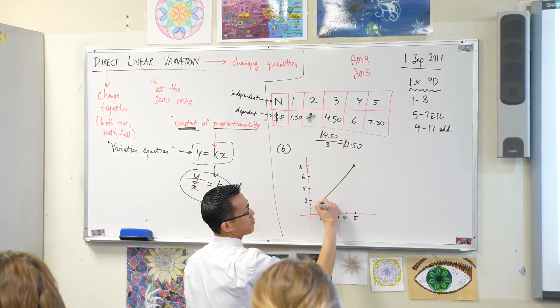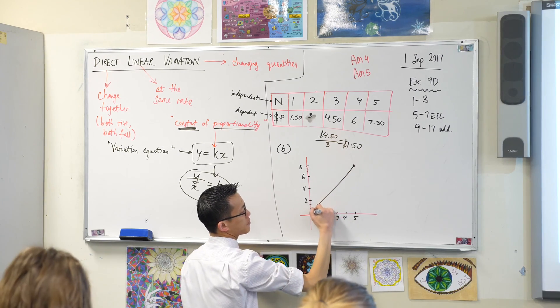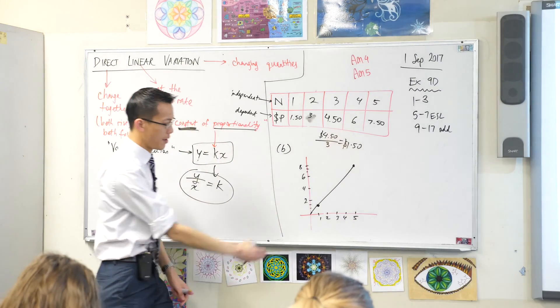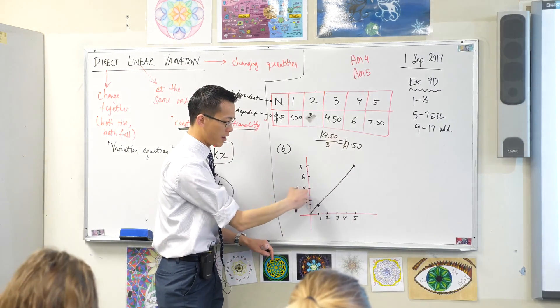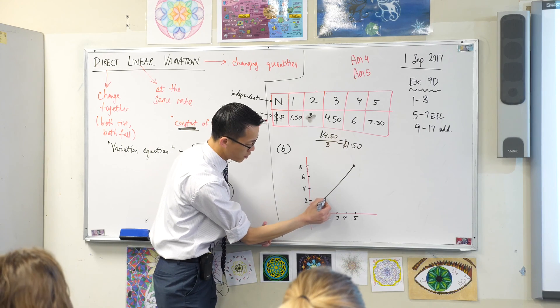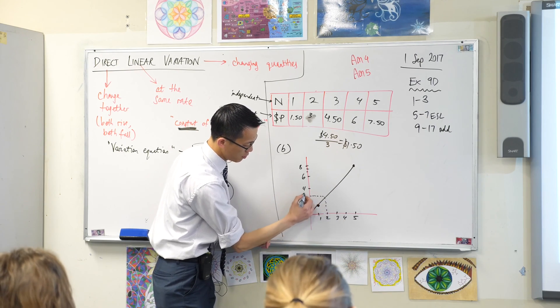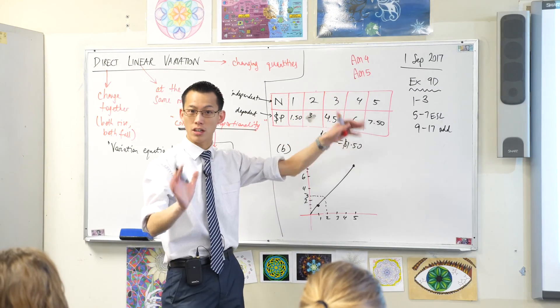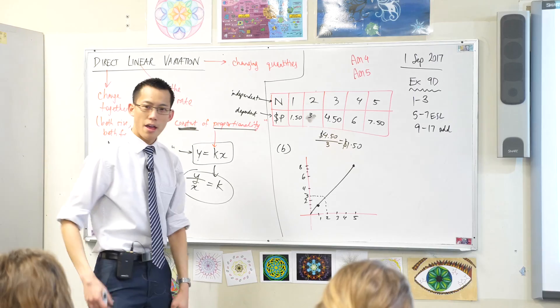So when you join these up, number one, you should be able to confirm if you draw your line up to where all of your other points should correspond to. For example, I went to 2. You should find that is equivalent to the other values that you've got. You can confirm those really quickly.